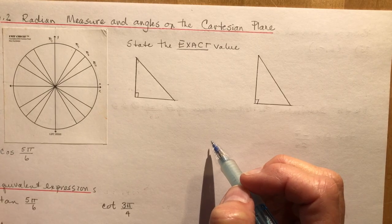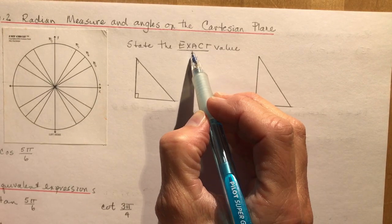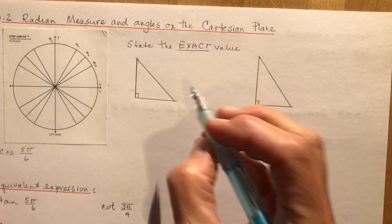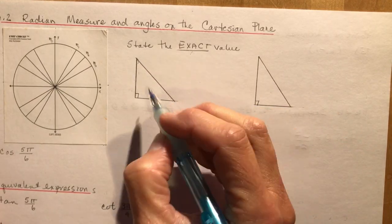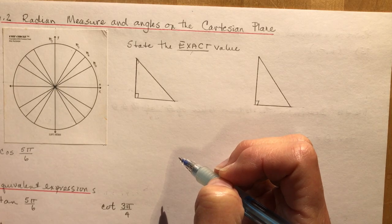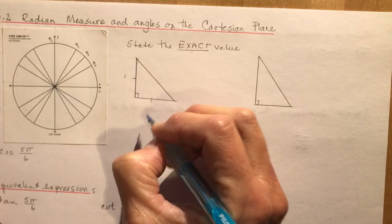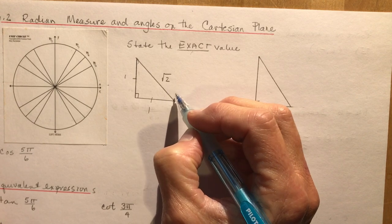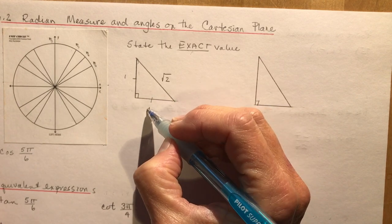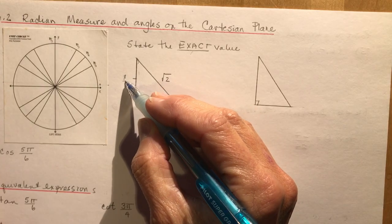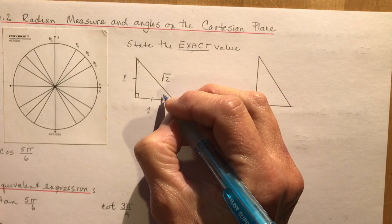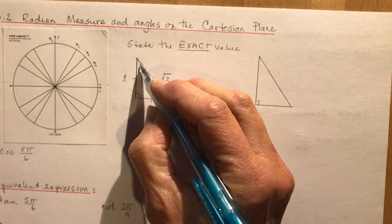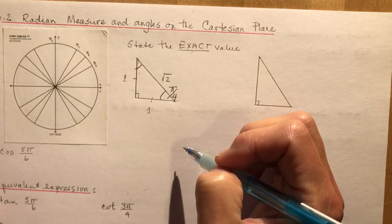Remember your special triangles, because every time you see the word 'exact' you have to use exact values — don't grab your calculator, use your head. We had an isosceles triangle with two equal sides of length 1, hypotenuse √2, and both angles are 45 degrees, which we now call π/4.